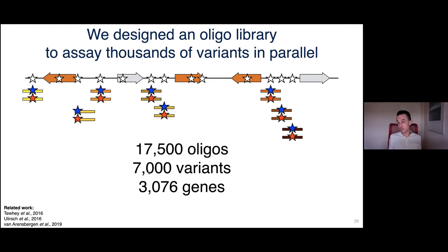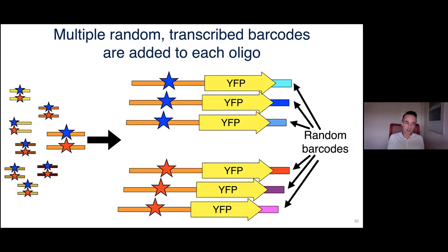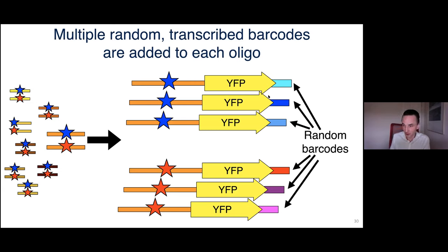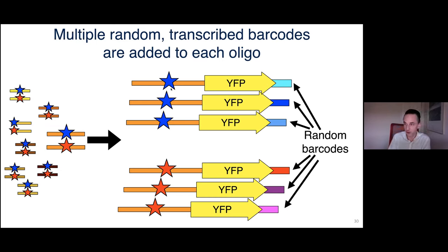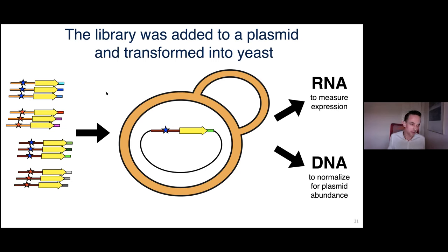We didn't want to do this for just one variant — we wanted to do it genome-wide. So we designed a library of over 70,000 oligos tiling across the genome such that for every variant tested there's a pair of oligos differing only at that variant. The library targeted about 7,000 natural promoter variants in roughly 3,000 genes. You can purchase this kind of library from Agilent or Twist Biosciences — it arrives in a single tube.